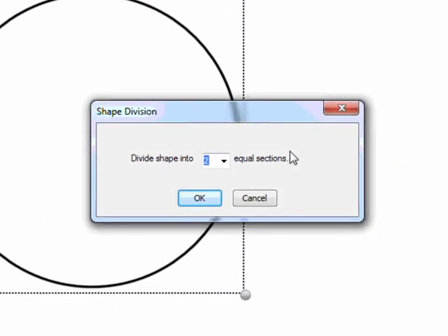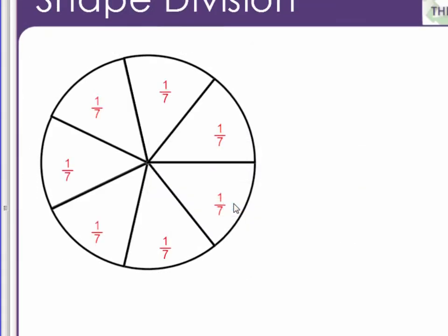It's going to ask me how many equal sections I want. I can choose between 2 and 12. I'm going to go ahead and click 7 since that can be really difficult to draw and then I click OK. Now you'll notice that my circle has now been divided into 7 equal shapes.